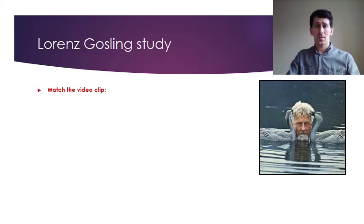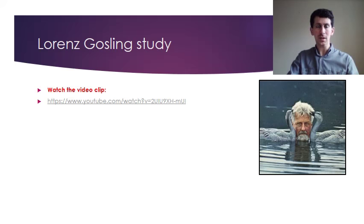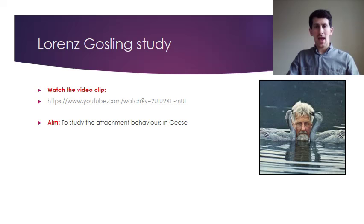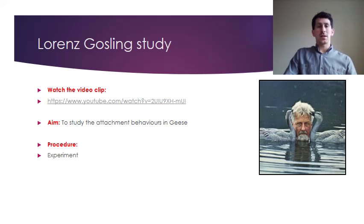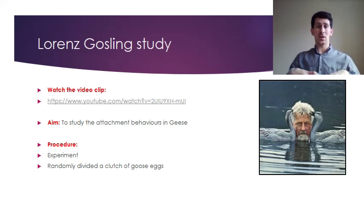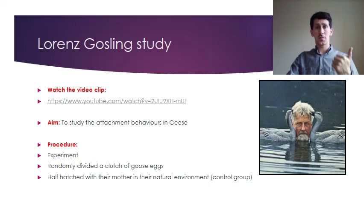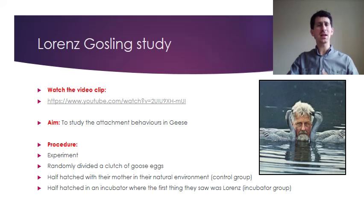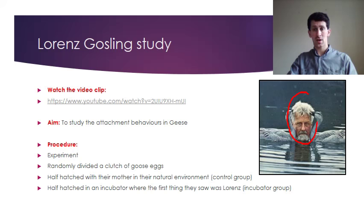Watch a video clip first to give you some background about Lorenz's study, then we'll carry on. The aim of the study was to investigate attachment behaviors in geese. He conducted an experiment and randomly divided a clutch of goose eggs into two groups: half hatched with their natural mother as a control group, and the other half hatched in an incubator where the first thing they saw was Lorenz.